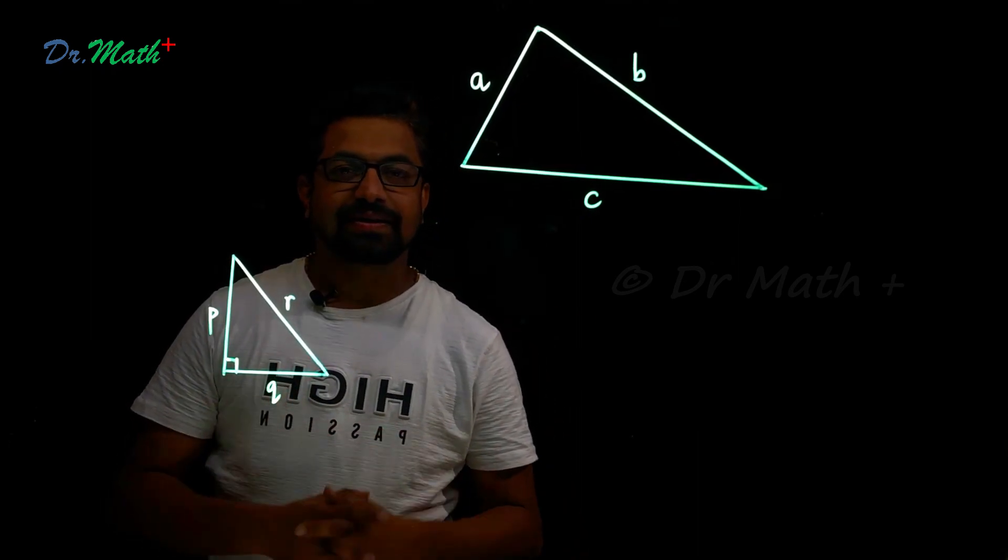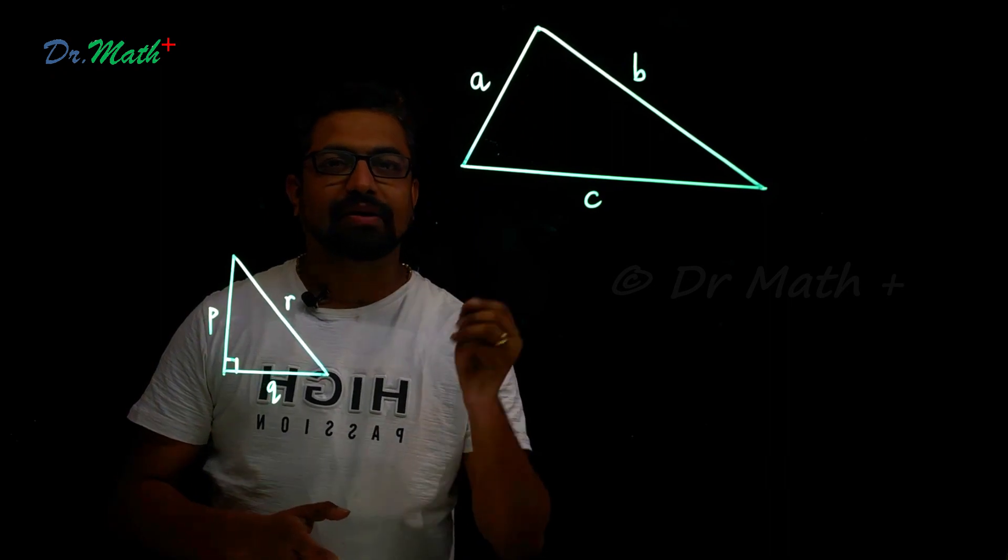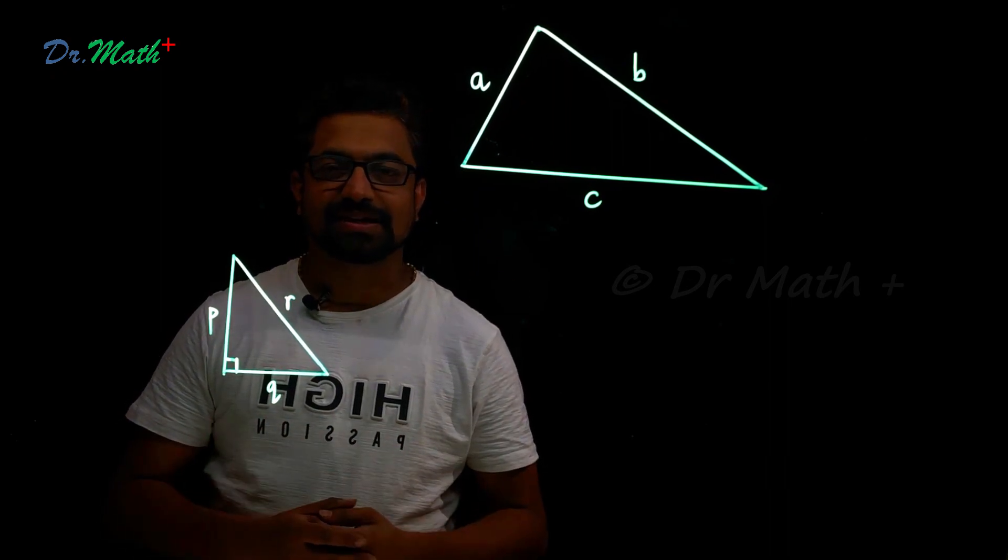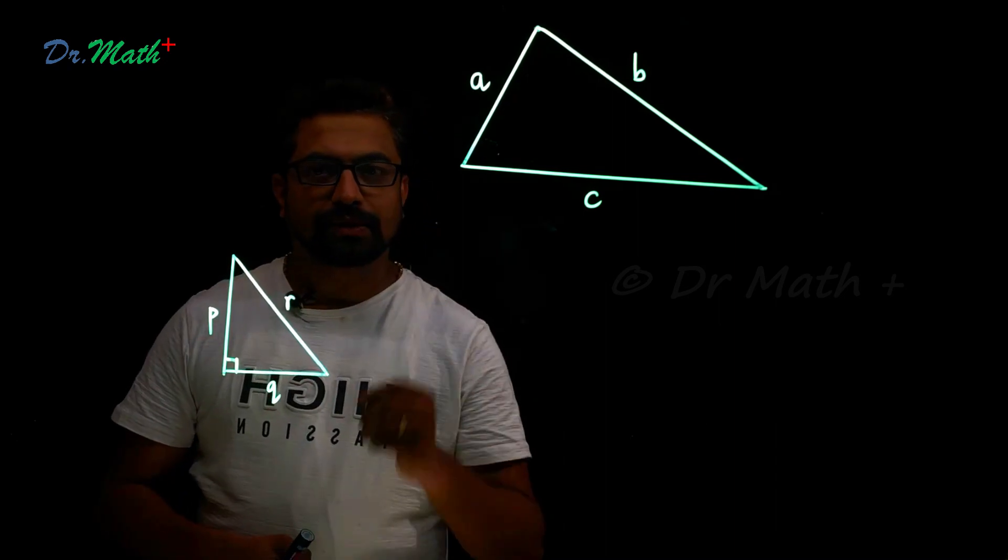Today let's prove that sum of any two sides of the triangle is greater than the third side. We also know that in a right angle triangle, hypotenuse is the largest side.